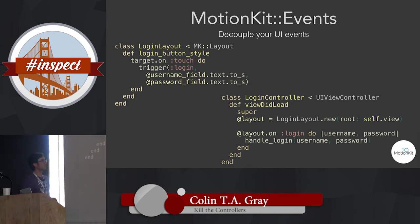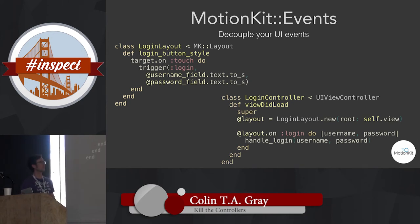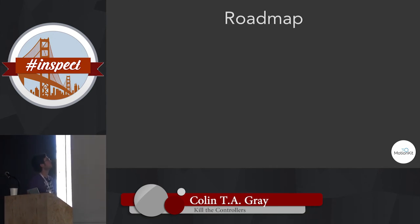In the controller, you instantiate the layout and give it a view. There's a root view created by default, or you can assign it. On a login event, you send the credentials to the storage object. That's the basic controller-layout-storage interaction.